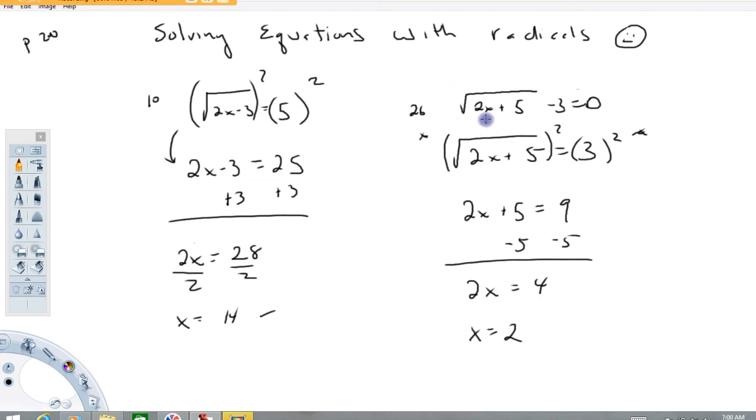So checking in here we put a 2 right here, 2 times 2 is 4 plus 5 is 9, square root of it is 3 minus 3 is 0 so we're good. Alright so here's an example of how to solve equations that have radicals in them. I hope that demonstrates that alright for you. Have a great day.